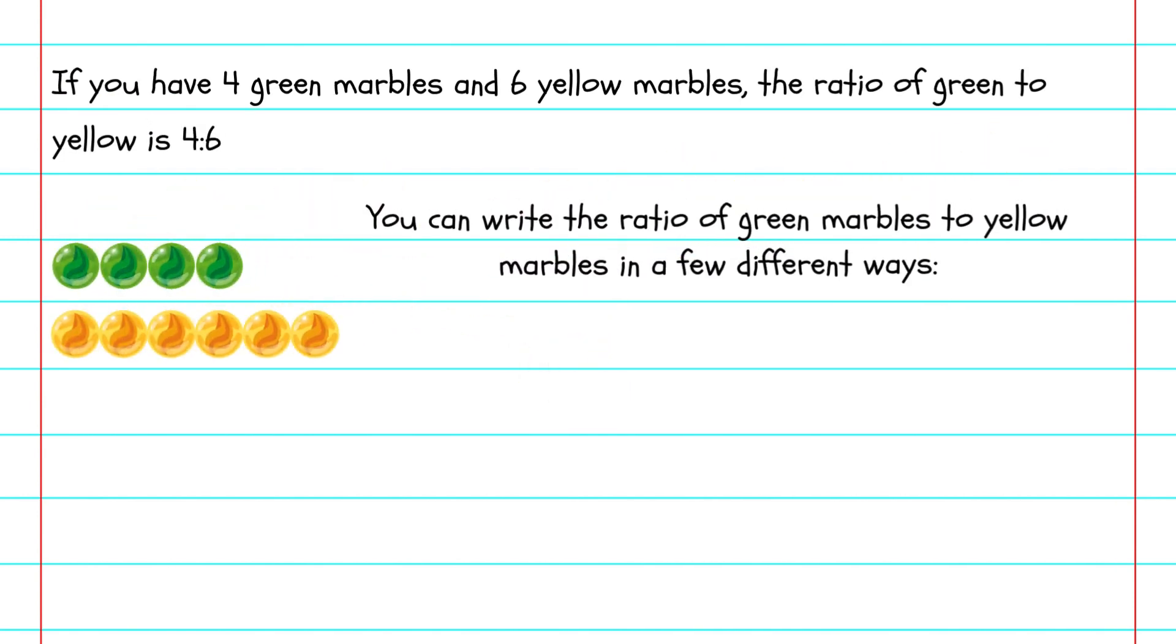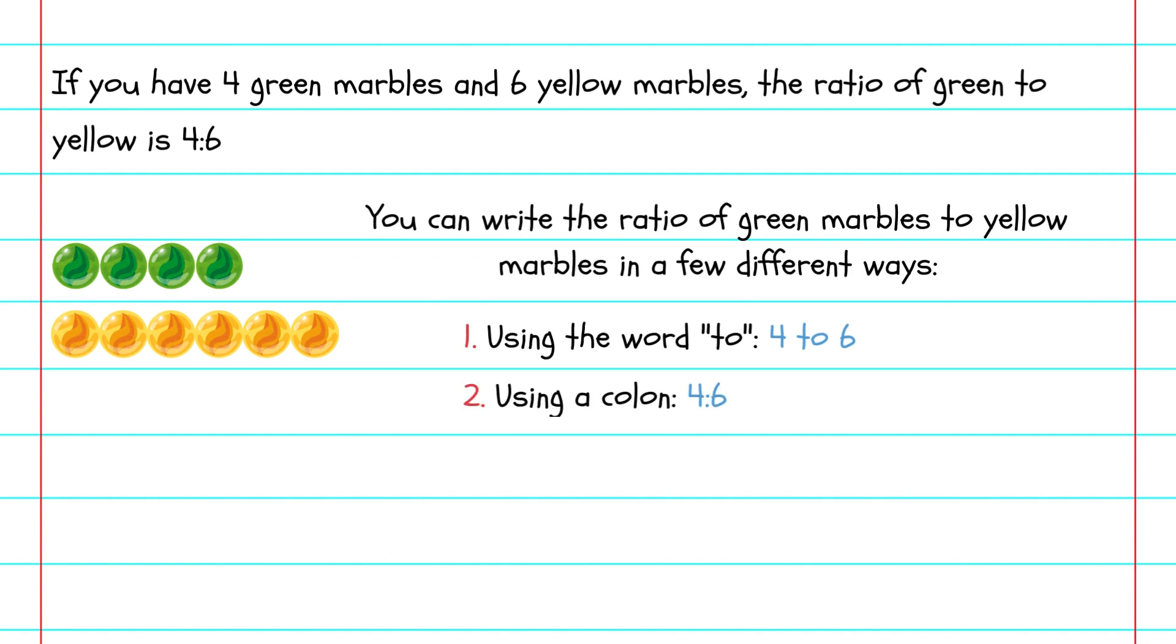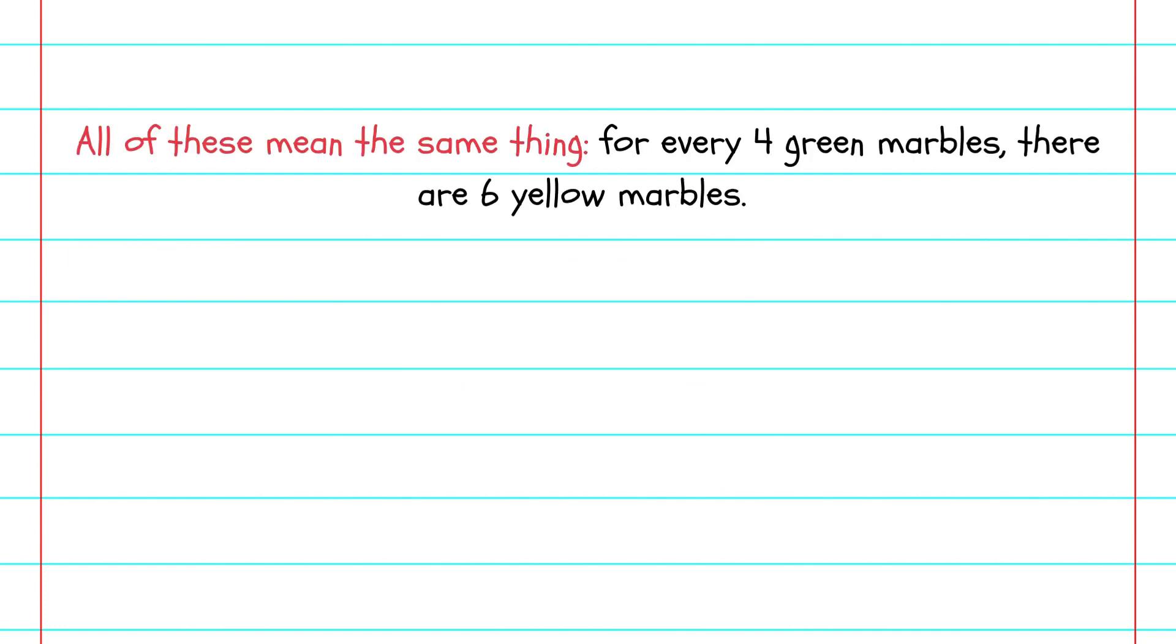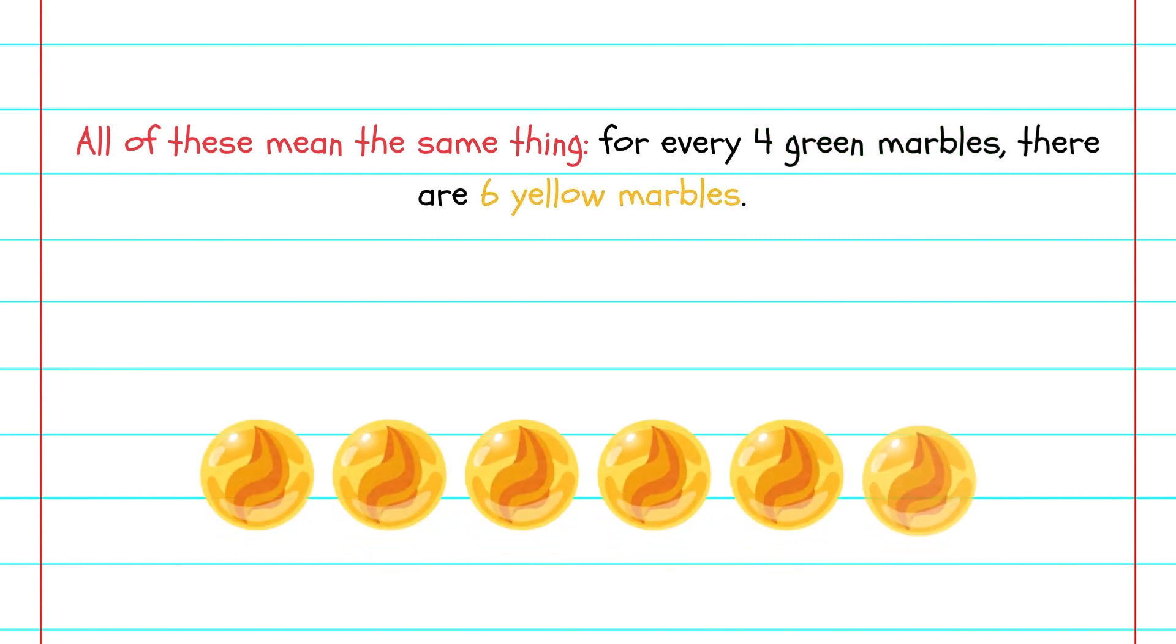As mentioned before, you can write the ratio of green marbles to yellow marbles a few different ways: using the word 'to', using a colon, and as a fraction. All of these mean the same thing. For every four green marbles, there are six yellow marbles.